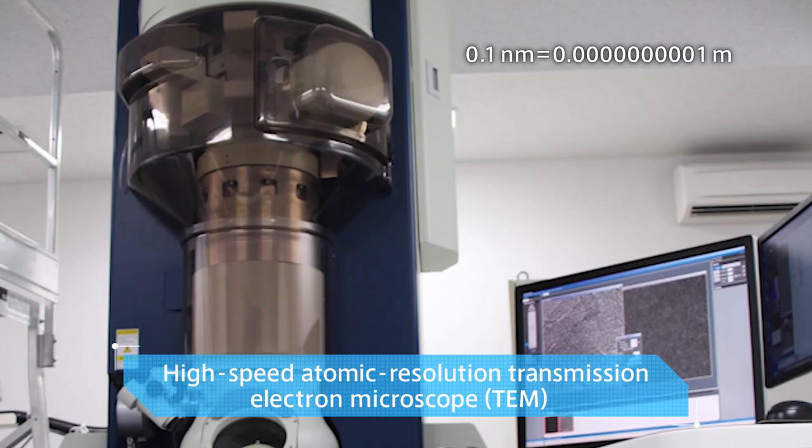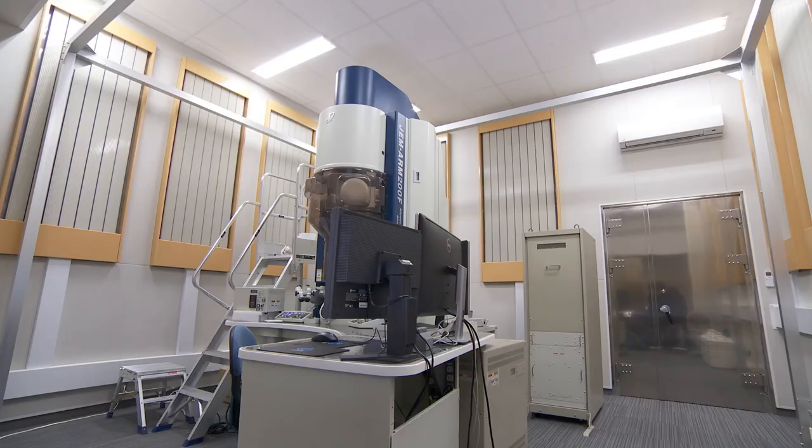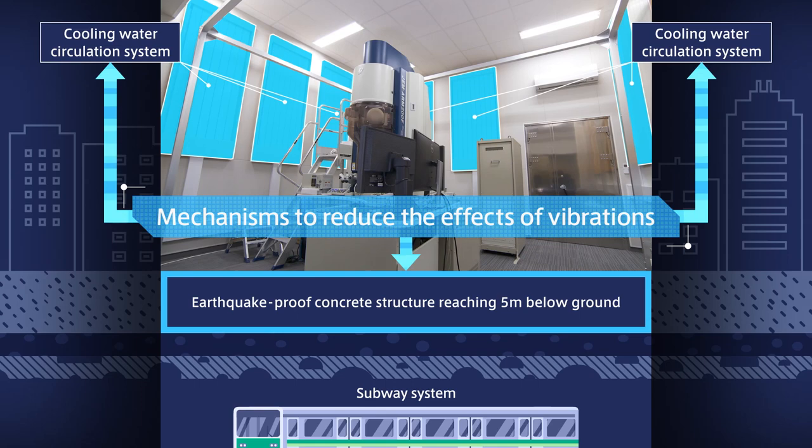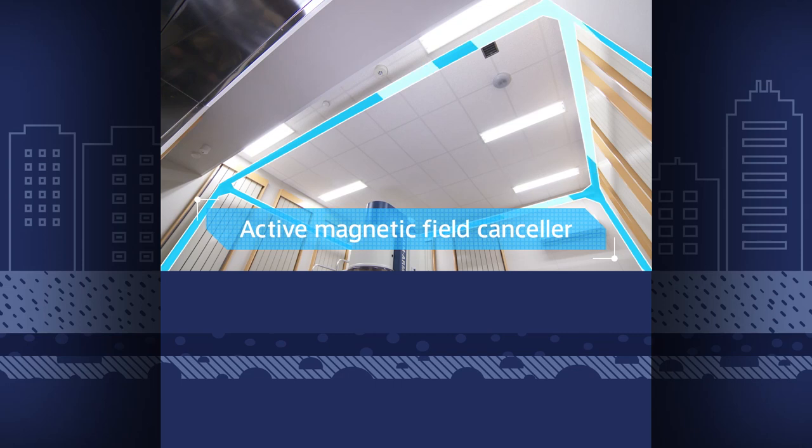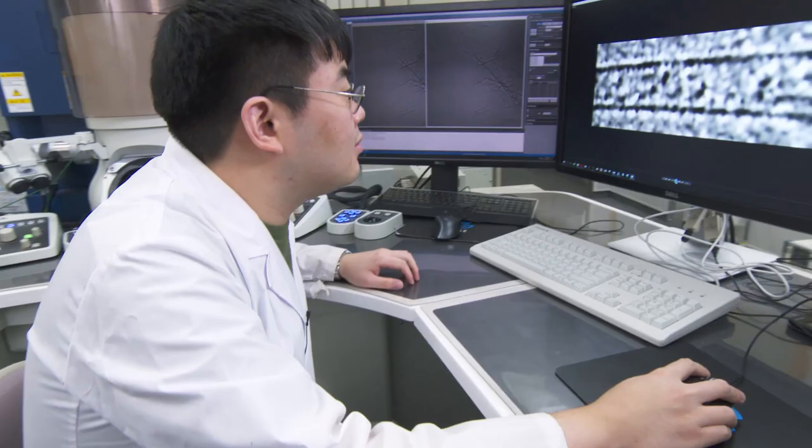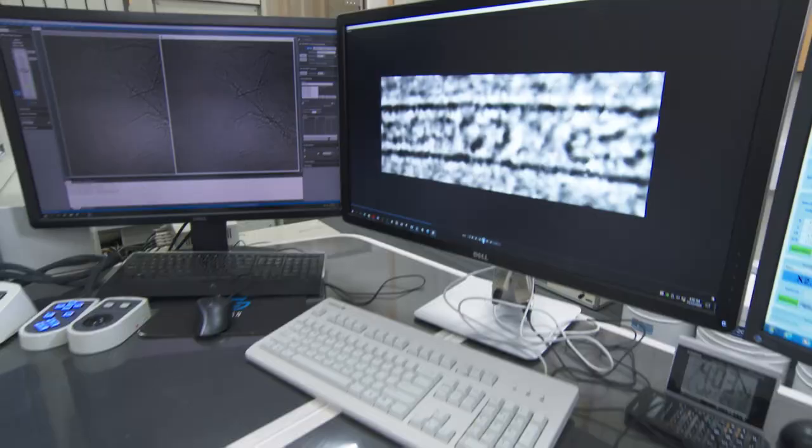In order to ensure that the electron microscope functions accurately in this room, we need to minimize external influences such as vibration and magnetism. Also, image processing technology has been developed to enable the video to be filmed at high speed, so it can be seen clearly.